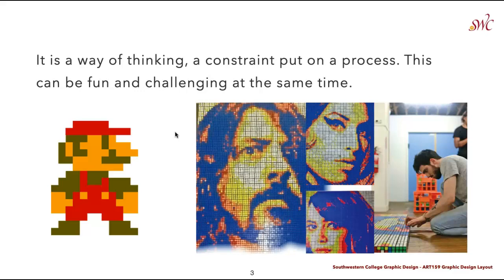It's amazing to see how we can recognize this character with such limited colors and simple shapes. On the right, we can see an example building off of this — an artist who creates portraits out of Rubik's cubes. This is another great restraint that uses both the colors available on the cube and a combination of turning those colors within the cube to create the overall image being displayed.